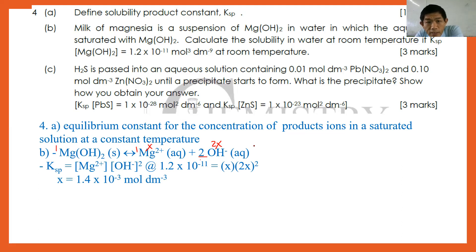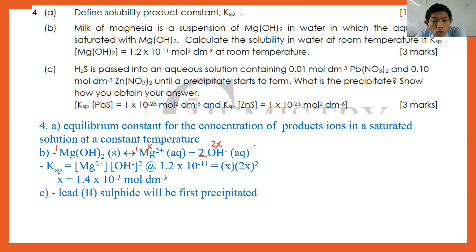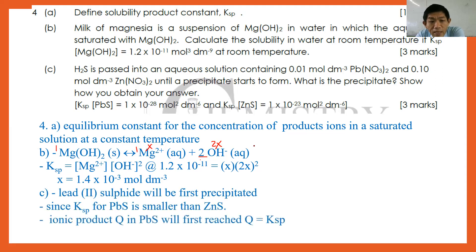Part C: H2S is passed into an aqueous solution containing 0.1 mol dm⁻³ lead nitrate and 0.1 mol dm⁻³ zinc nitrate until a precipitate starts to form. What is the precipitate? Lead(II) sulfide PbS will be the first precipitate, because the Ksp of PbS is smaller than that of ZnS. The ionic product Q for PbS will first reach the point where Q = Ksp, so you first observe lead sulfide precipitating.